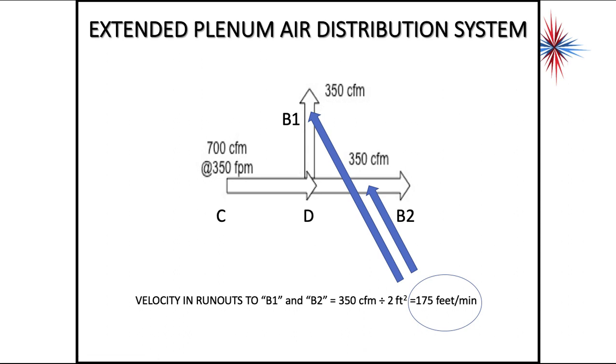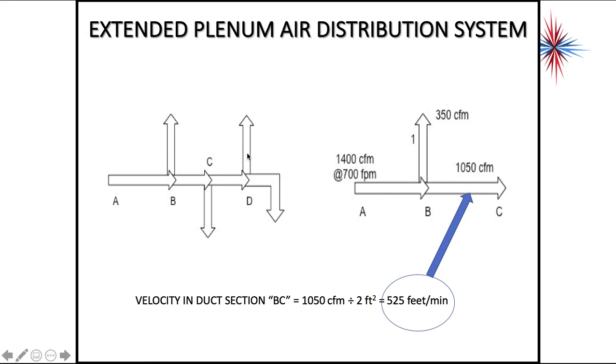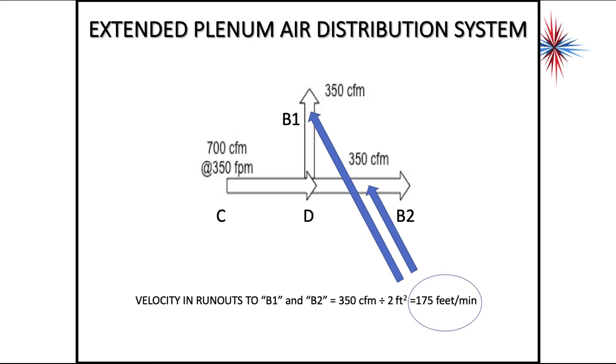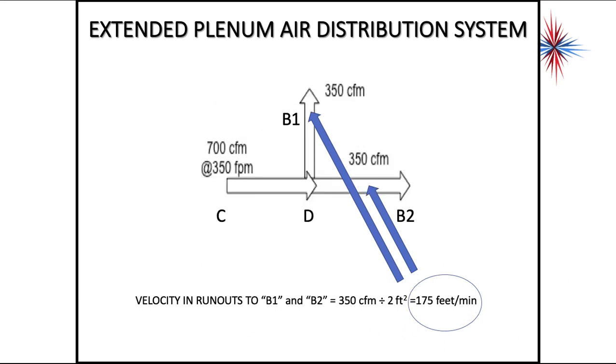So now we have the end of the duct reached. I have my, after my point D, I have the takeoffs for B1 and B2. So let's go back, I'll show you it here. We're talking these two takeoffs right here. So each of these is 350. So I have 700 CFM coming in, I have 350 going into B1, and that remains 350 for B2. So each of these, if I say this is a two square foot duct, 350 divided by two is 175 feet per minute. So B1 and B2 is all the way at the end of my duct system, and it's going to have very small velocities.